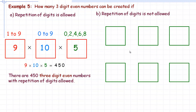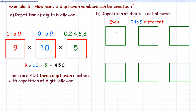Part B is more complex because we're not allowing repetition of digits. What complicates this is the digit zero — it can't go in the first spot but can appear at the end. Because of this we split into two cases. Case one: the number starts with an even digit. Even digits are 0, 2, 4, 6, 8, but since zero can't be first, only 2, 4, 6, or 8 can go in the hundreds spot — that's four ways.